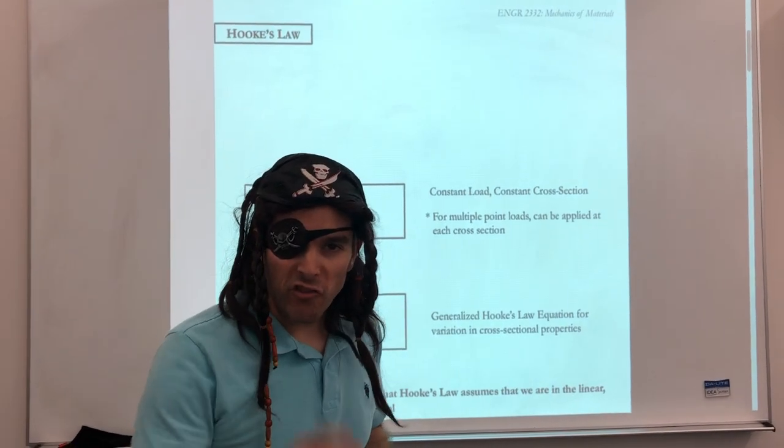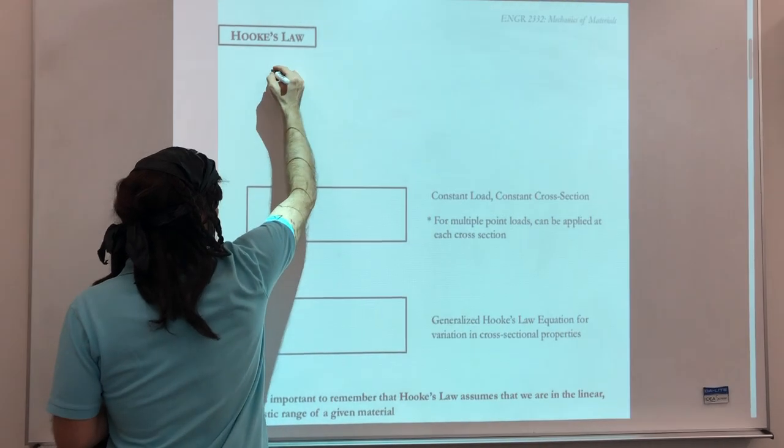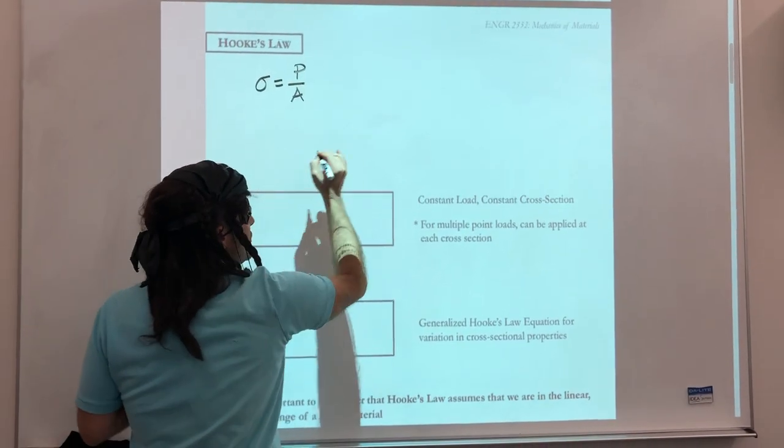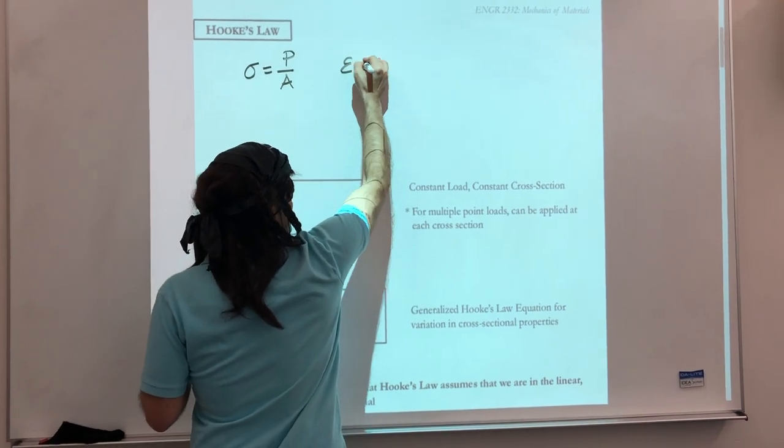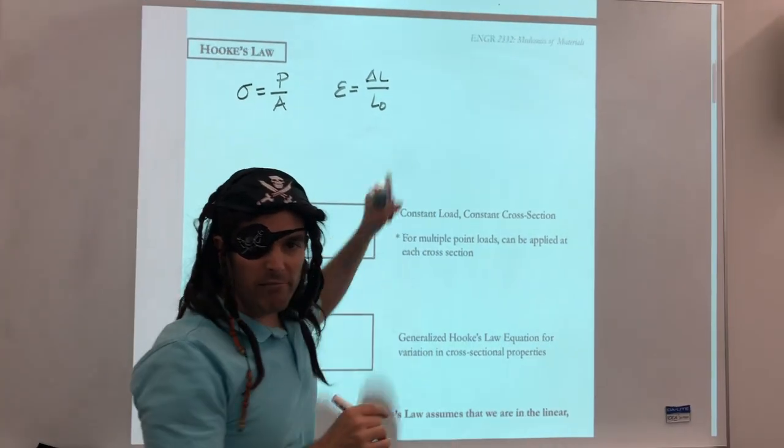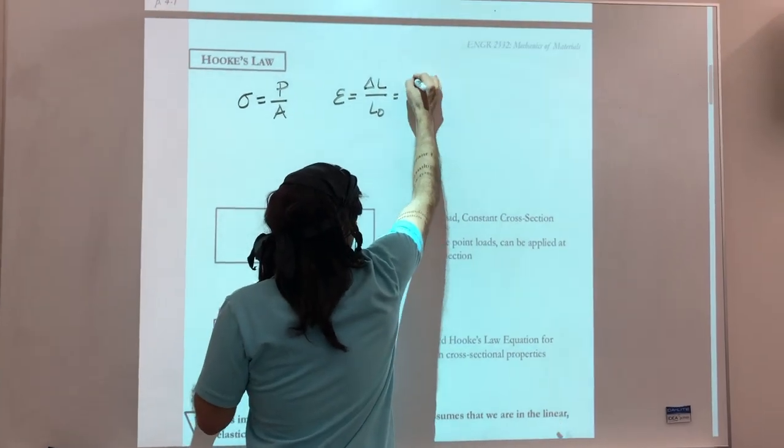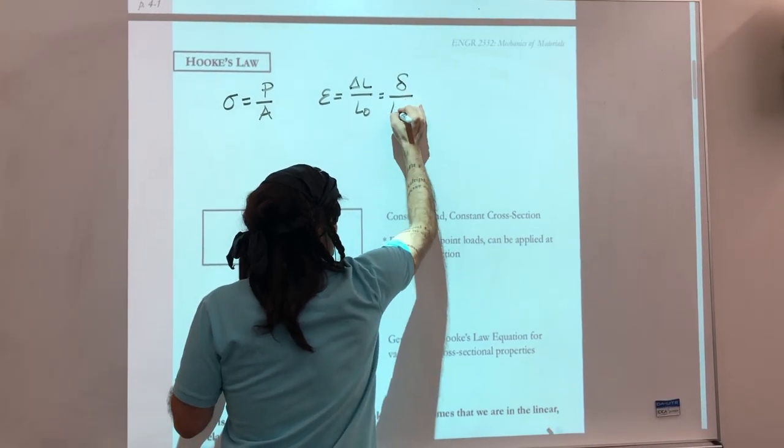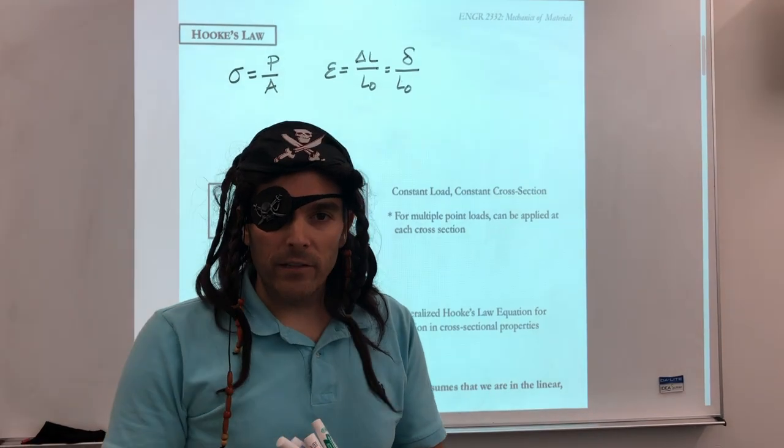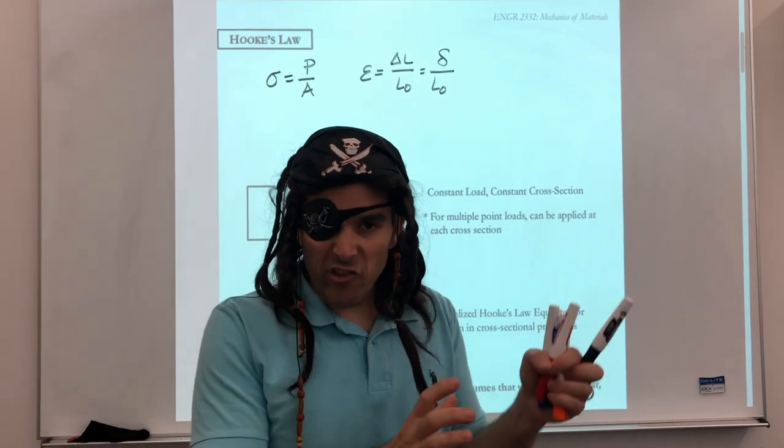Hopefully you remember stress sigma is equal to P over A, and strain is equal to delta L over L0. Now I'm going to rewrite delta L as little delta. This is the elongation or the delta L of our one-dimensional axial stretch. So that tells us a little bit about stress and strain.